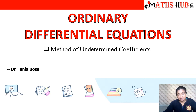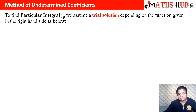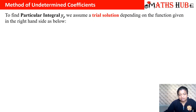The method of undetermined coefficients helps us to calculate the particular integral. We assume a trial solution depending upon the right-hand side function provided in the differential equation, then put that trial solution into the differential equation and calculate the constants. Once we get the values of the constants, we put them back into the trial solution, which gives rise to the particular integral.